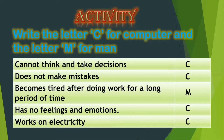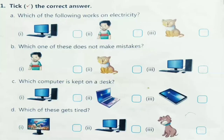Now let us do some exercises. The first one is: pick the correct answer. For each question, three options are given. You have to find the correct answer and put a tick mark. First one: which of the following works on electricity? The options are computer, boy, and cat. So which will work on electricity? It is computer. Very good.